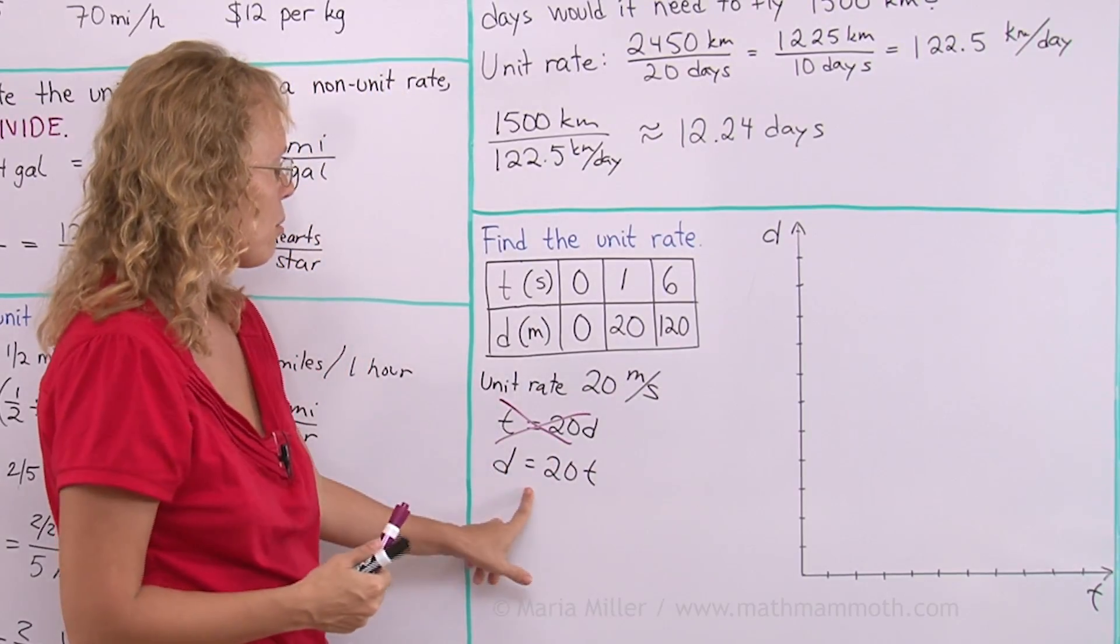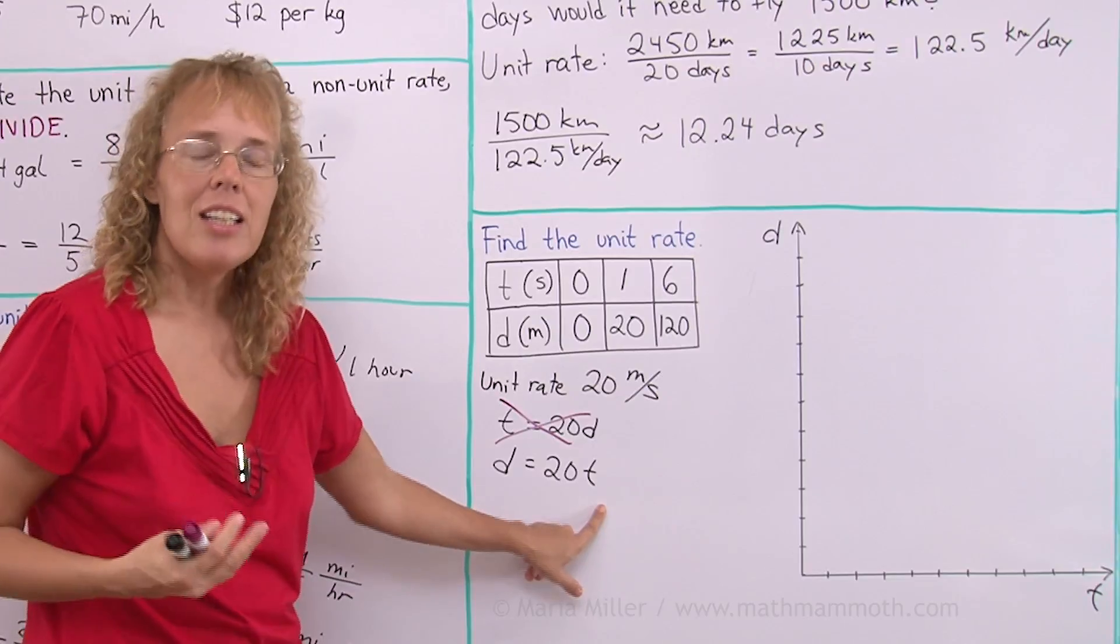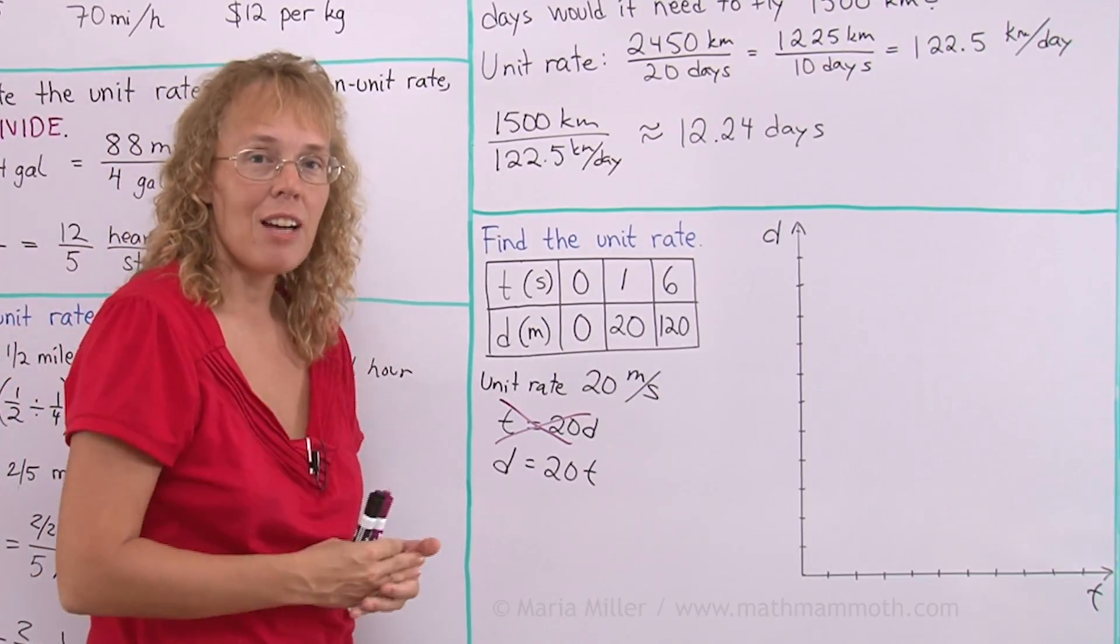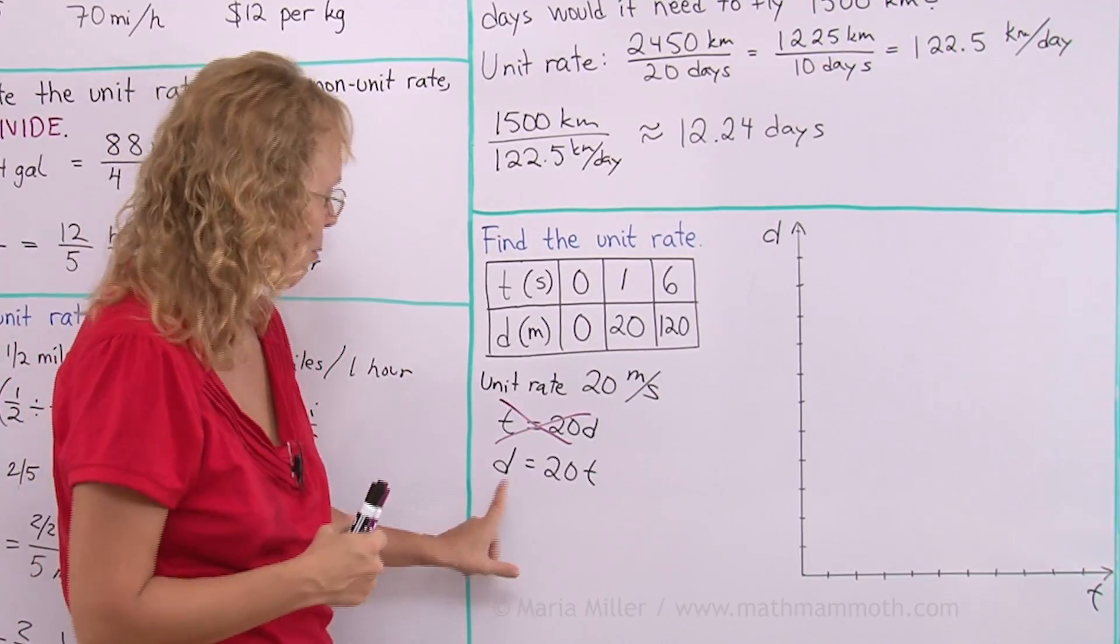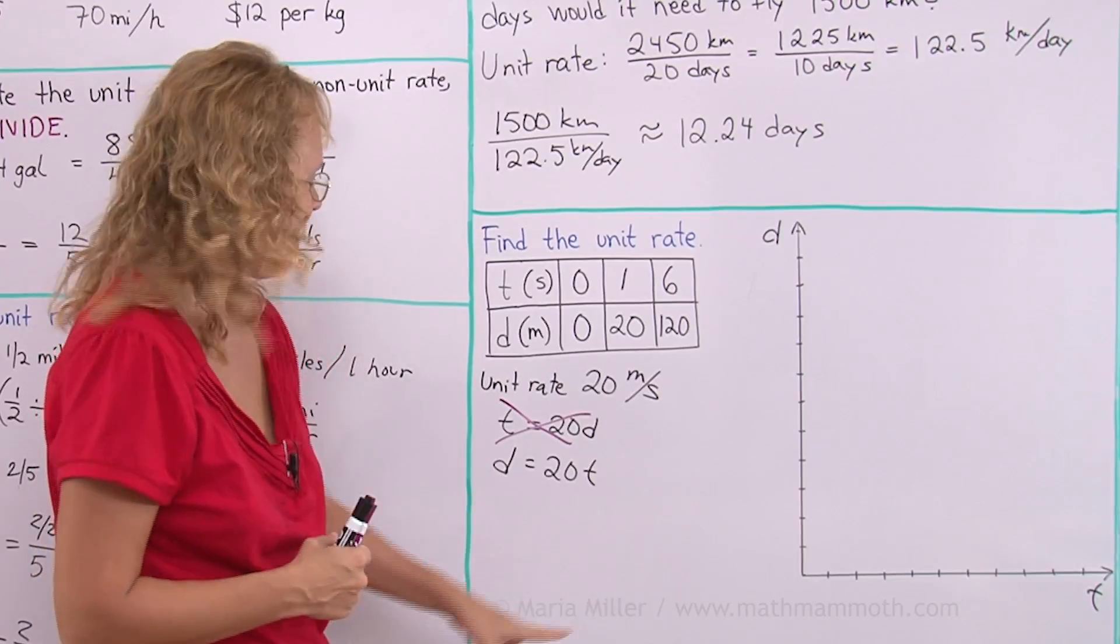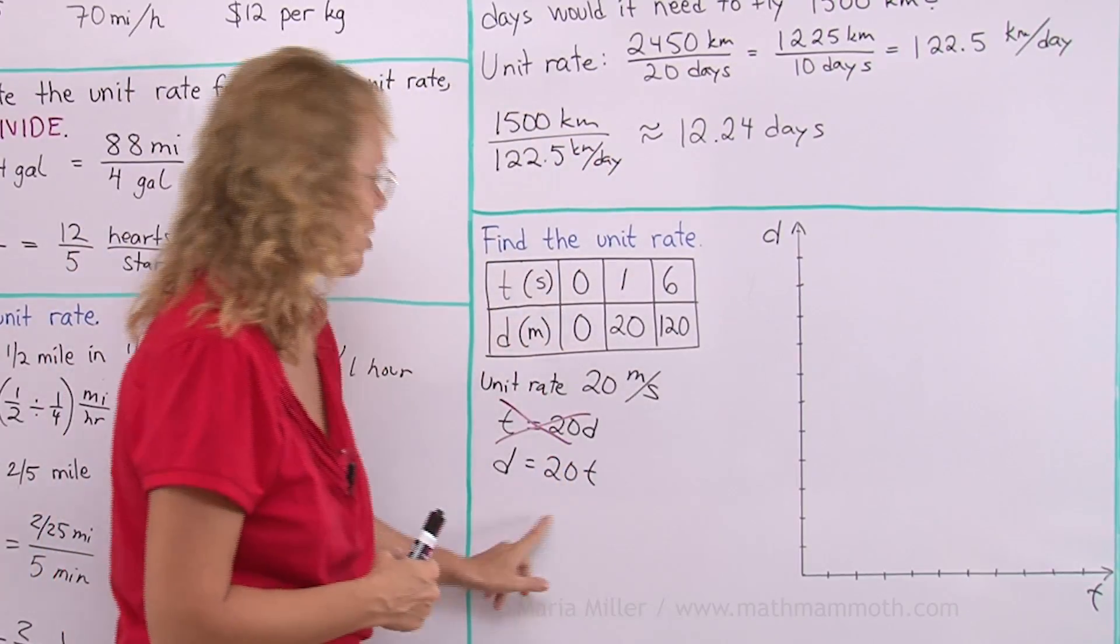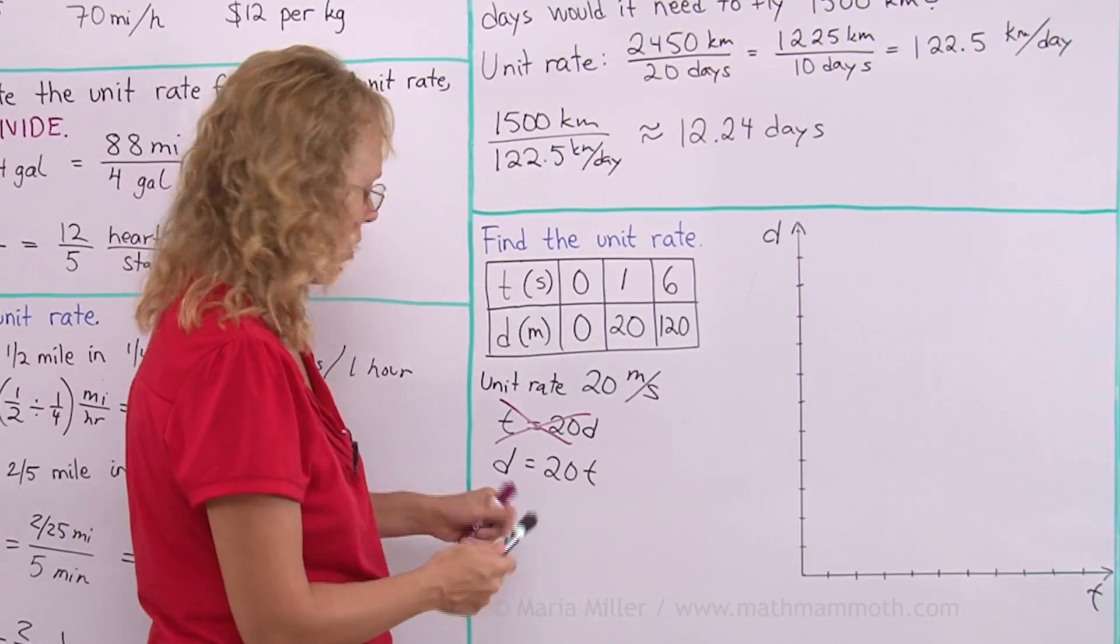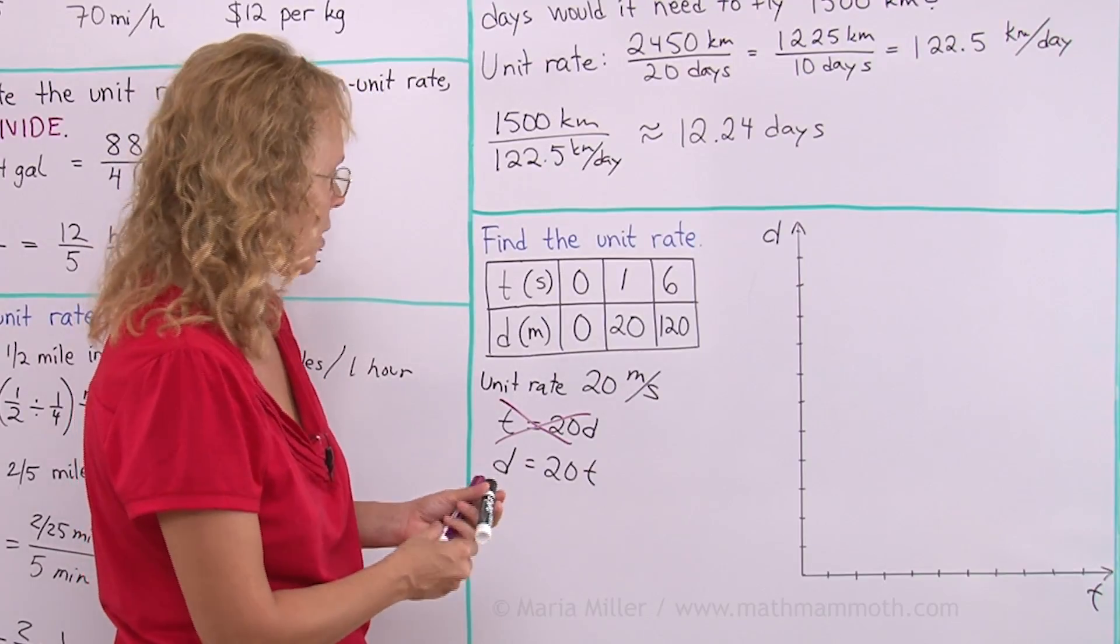It is this one, d equals 20t. Just like if you're familiar with plotting graphs with the y and x, you always have y equals something x. So here, the vertical axis, d equals something t. That's our equation. And now we're going to plot it.